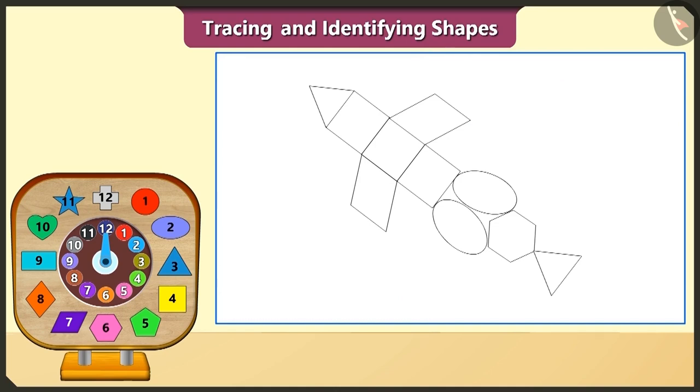Now look at these blocks. This is a circle, this is a pentagon and this is a rhombus. Now we will place these blocks in the three traced square shapes and trace them.